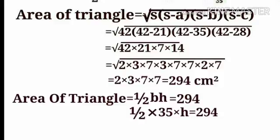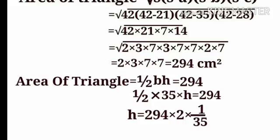H is the altitude. Therefore, if you solve from the equation one by two times base times H equals area, you can isolate H and find its value.